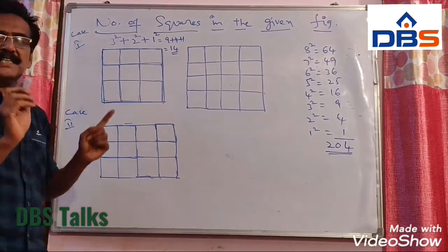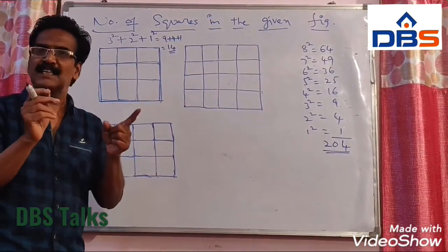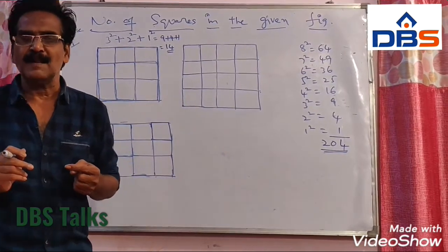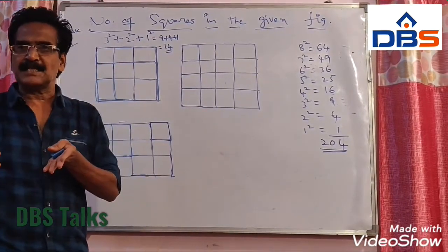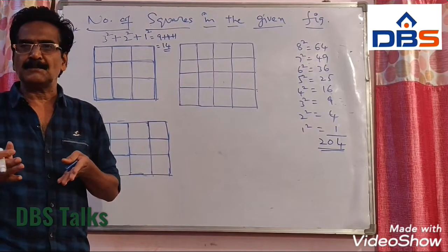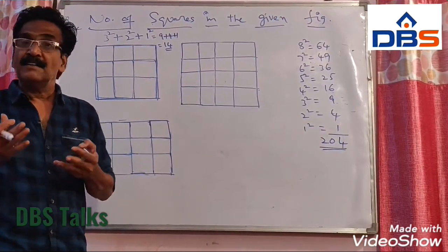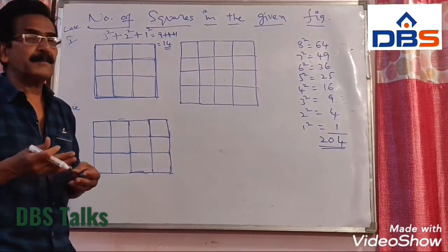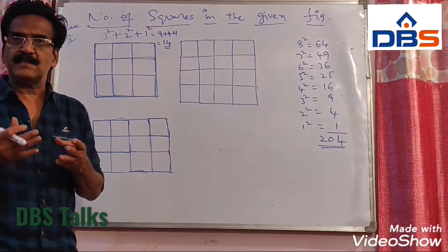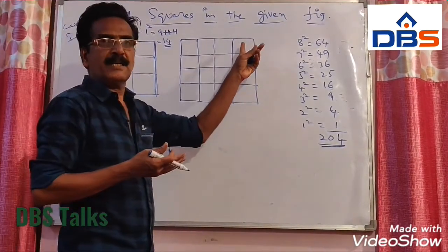So every time we need not count — when the number of rows and columns are equal. If the problem has 3 rows and 3 columns, then 3 squared plus 2 squared plus 1 squared. When the given figure has 4 rows and 4 columns, the same approach applies.